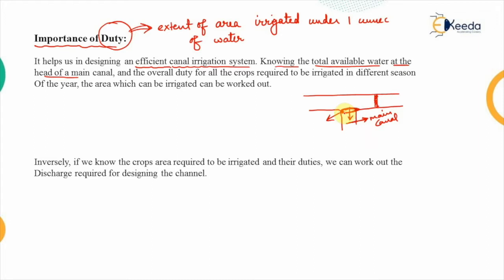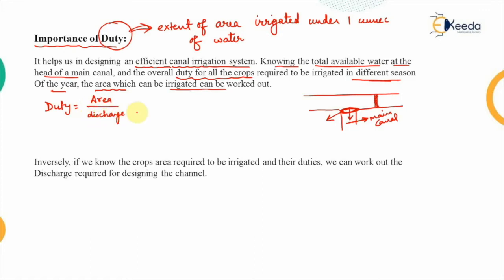If we know the amount of water available at that point, we know the total water available for the crops. And if we know the duty for all the crops — meaning how much area of a particular crop can be irrigated by supplying a certain amount of water — we can easily calculate the area which can be irrigated. Area equals duty multiplied by discharge.